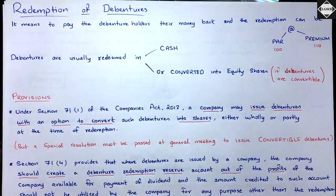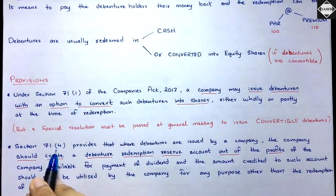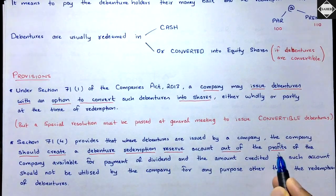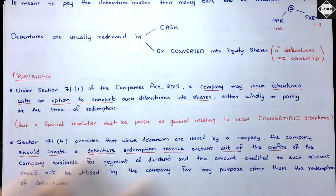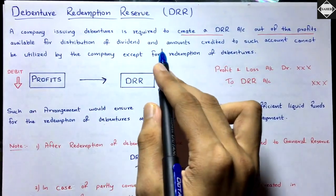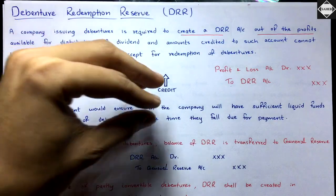The Companies Act 2013 Section 71(1) allows the company to issue debentures with an option to convert them into equity shares — wholly or partly — at the time of redemption. To issue such convertible debentures, a special resolution must be passed at the general meeting to get approval from equity shareholders. Section 71(4) states that companies issuing debentures must create a special reserve called Debenture Redemption Reserve (DRR) out of profits available for distribution as dividend from Profit and Loss.